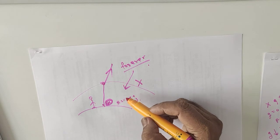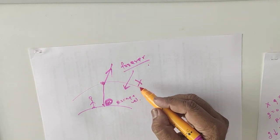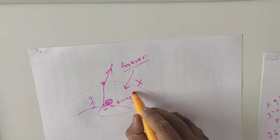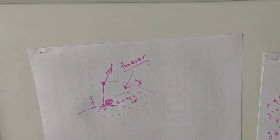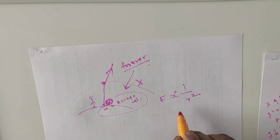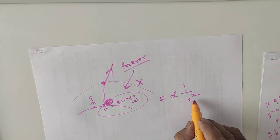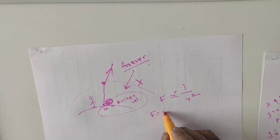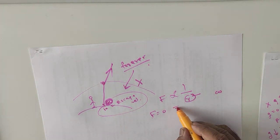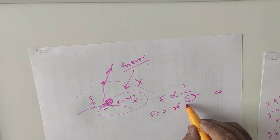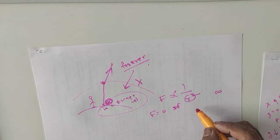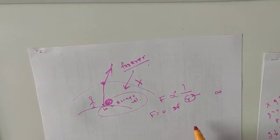An object going vertically upwards from the surface of Earth with initial velocity equal to Escape Velocity. The force of gravity is inversely proportional to the square of the distance between them, and it becomes 0 only at infinite distance. When F = 0, if r is infinity, then 1 upon infinity means 0. Therefore, F = 0 at infinite distance, and from this we can find the Escape Velocity.